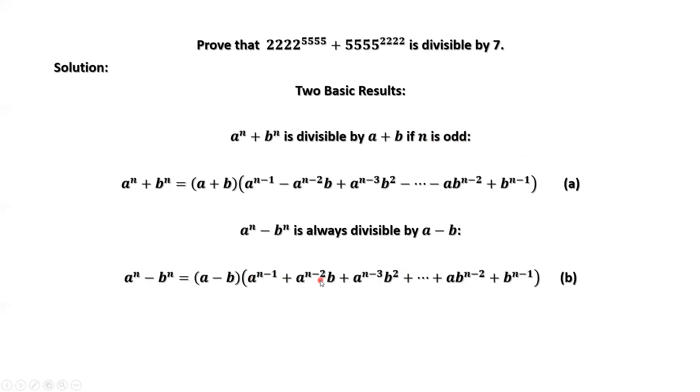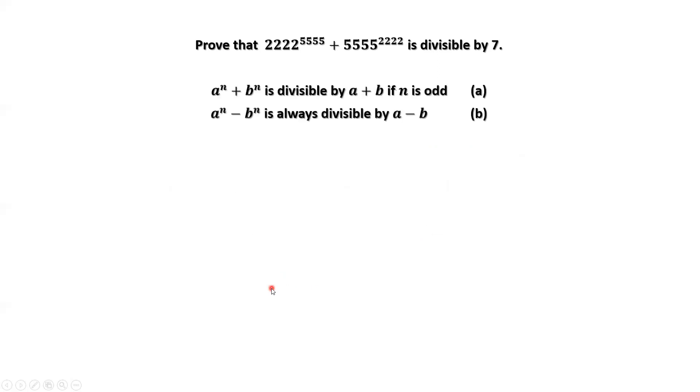How to use these two results to complete our proof? We rewrite this given expression into three groups: the first group, second group, and the third group. So originally we only have this term here and this term.